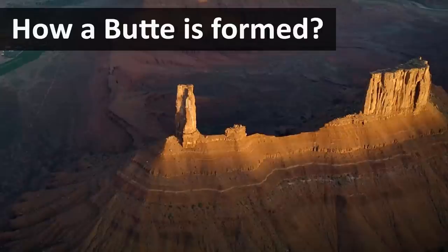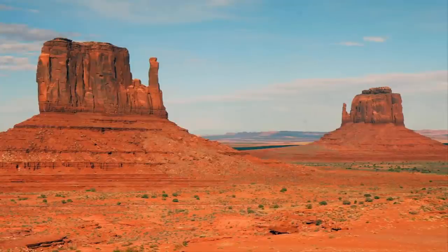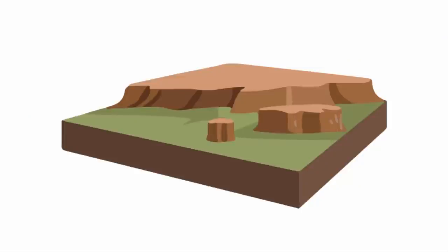In this video, we are going to learn how a butte is formed. A butte is an isolated hill with sharp vertical sides and a flat top. Buttes are smaller in size compared to a plateau.